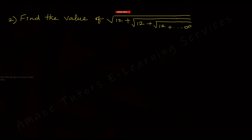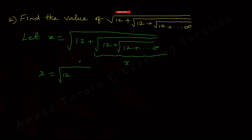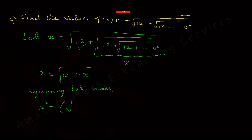Again we need to find the value of this surd. I'm going to follow the same technique. Let x equal the whole expression — square root of 12 plus square root of 12 plus square root of 12 and so on up to infinity. Once again, the inner part can also be written as x. So the equation becomes: x equals square root of 12 plus x. Squaring both sides gives x squared equals 12 plus x.